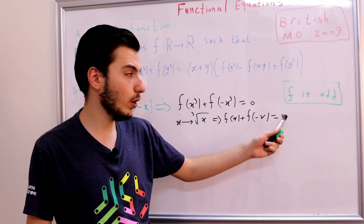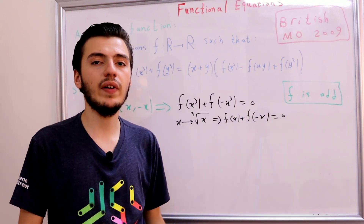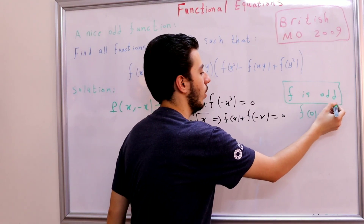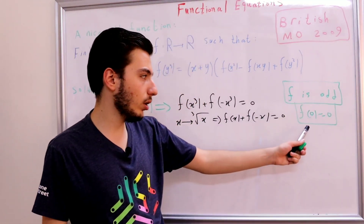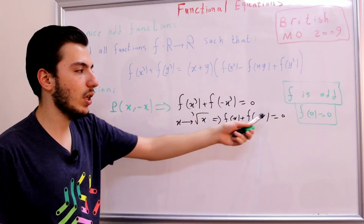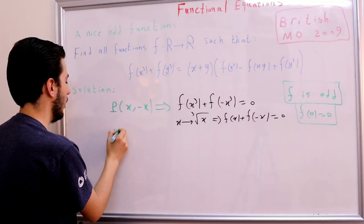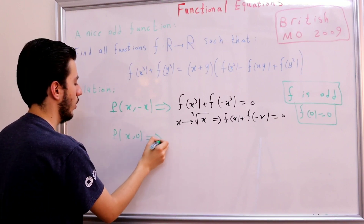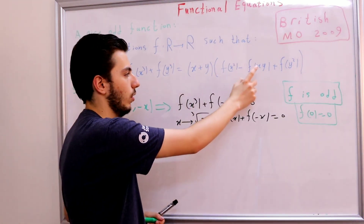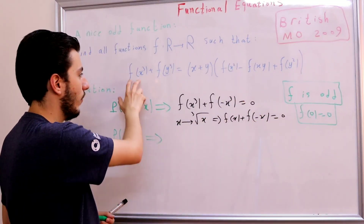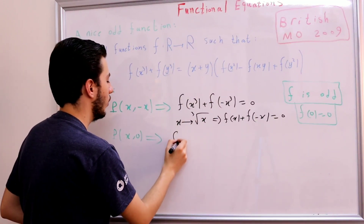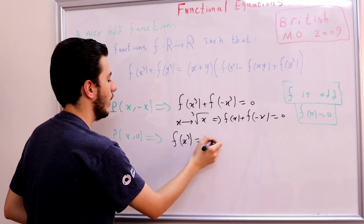Since f is odd, we immediately have f(0) = 0. We can now use this in our functional equation by substituting y = 0. With substitution P(x, 0), the terms involving y vanish and we get f(x³) = x·f(x²). This is a very nice property: f(x³) = x·f(x²).